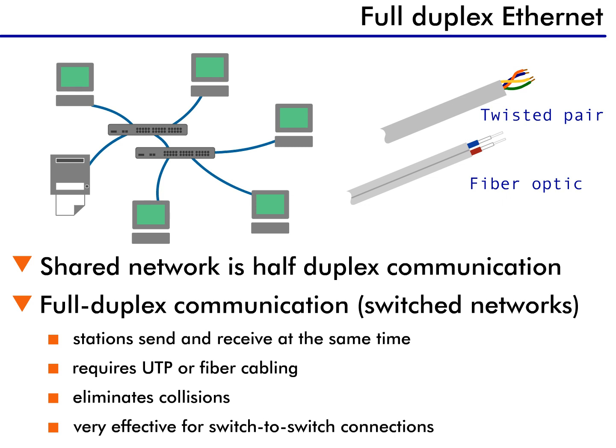Full-duplex communication on switched networks changed all of this. Full-duplex communication allows a station to send and receive at the same time. It's important to note that repeaters and coax cabling do not support full-duplex communication. Full-duplex is only possible on switched networks that use UTP or fiber cabling, because twisted pair and fiber use separate channels for transmitting and receiving data.